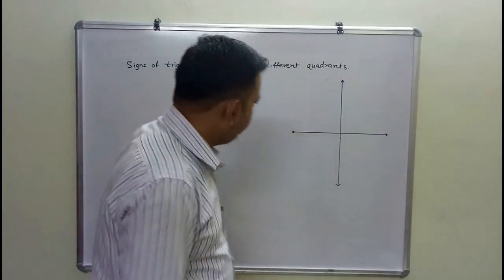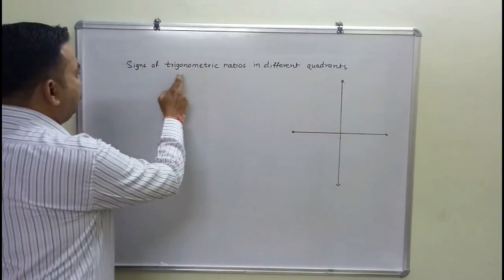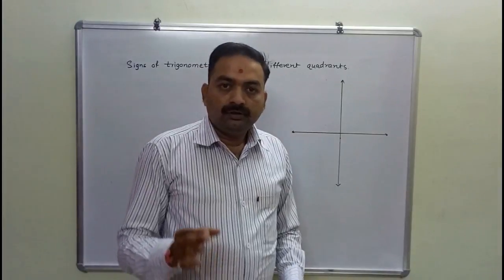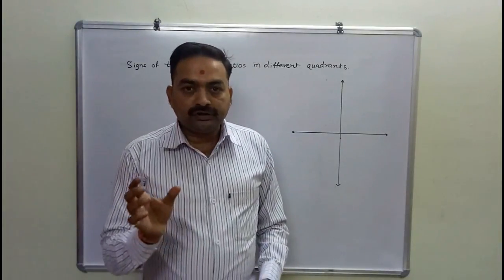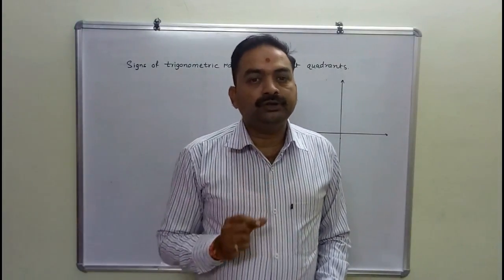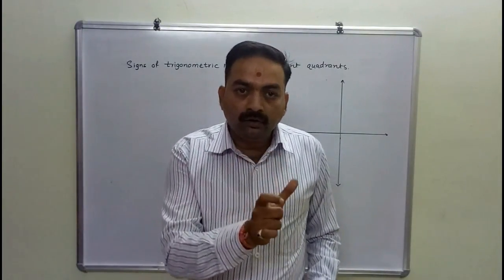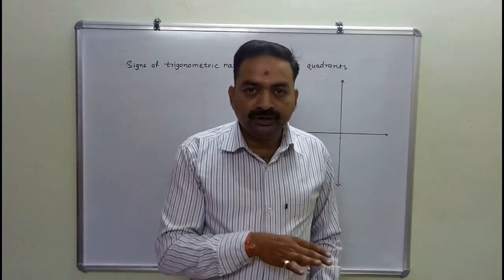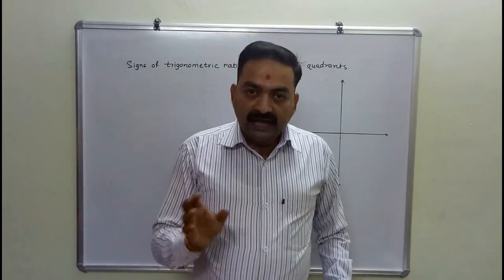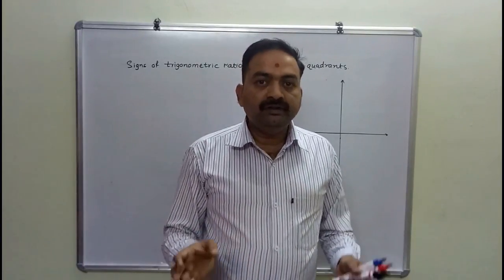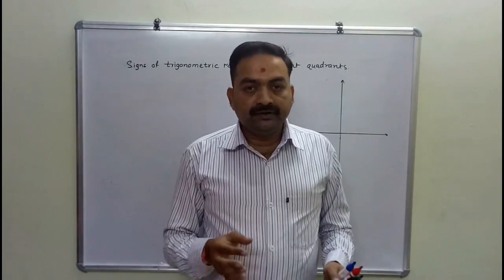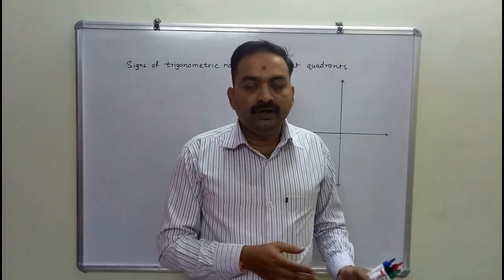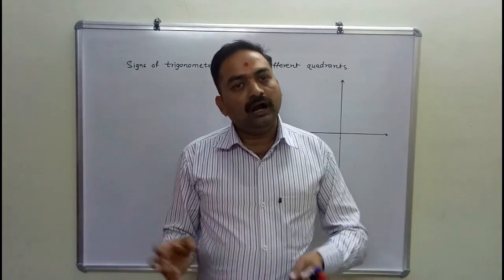Now we will study the signs of trigonometric ratios in different quadrants. We will see where the sign is positive and where it is negative.